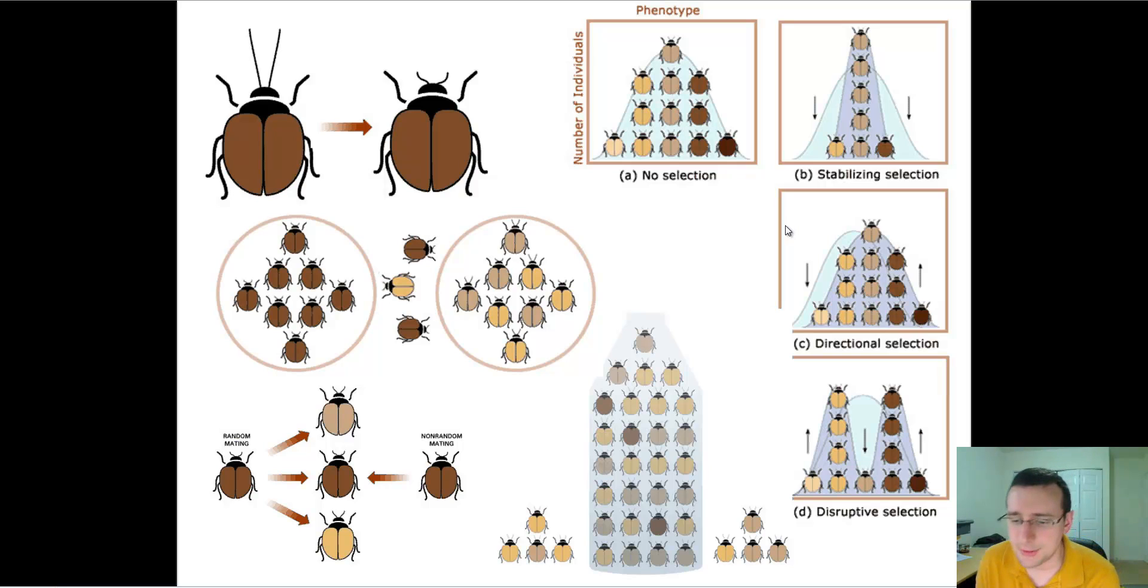Another factor that definitely leads to variations within the population is selection. Selection has to do with selecting towards a look or away from a look so that it's going to be more common in the population.